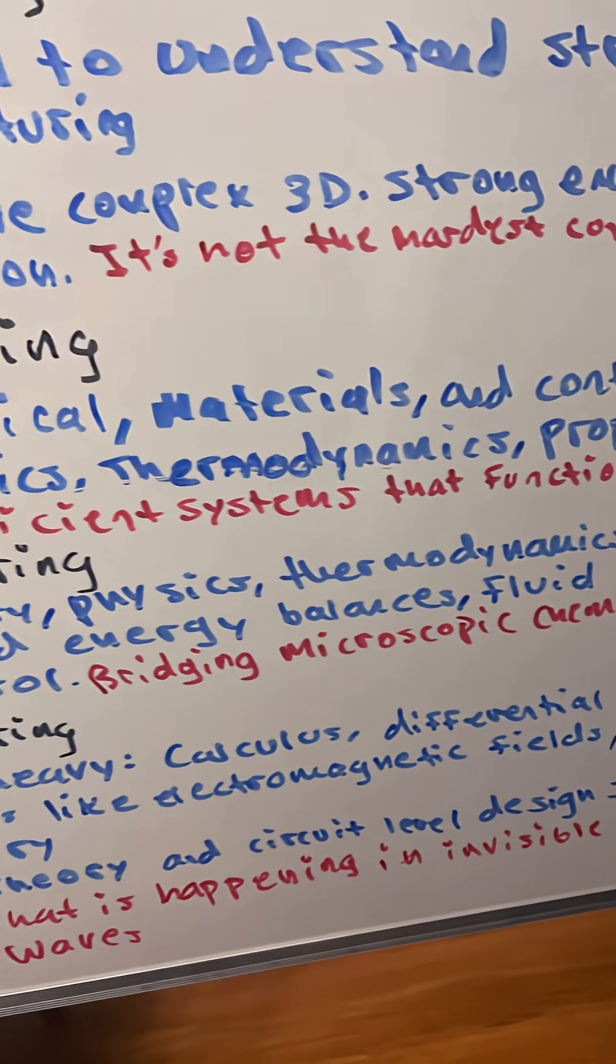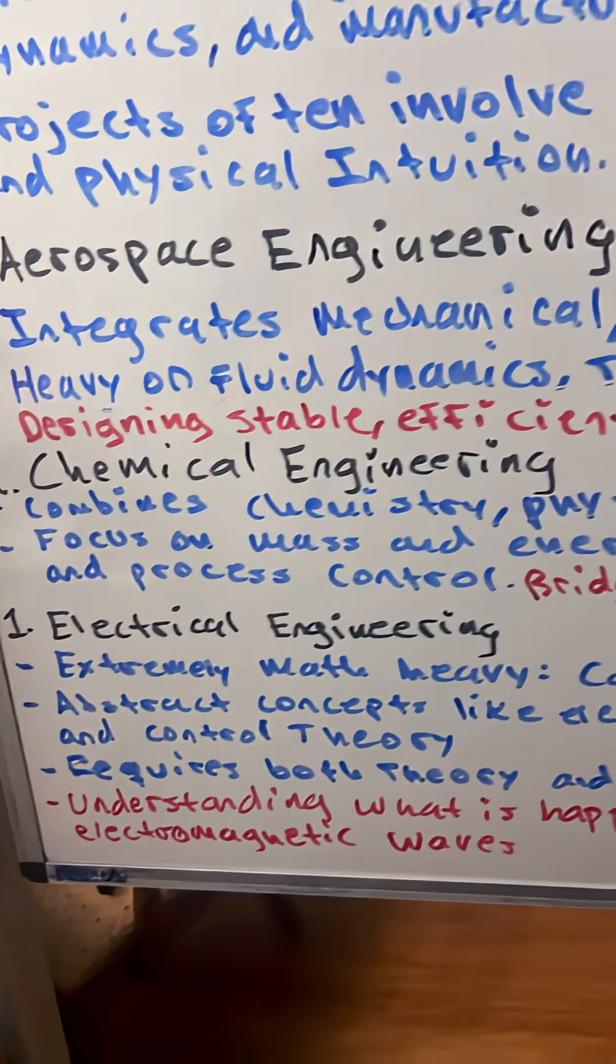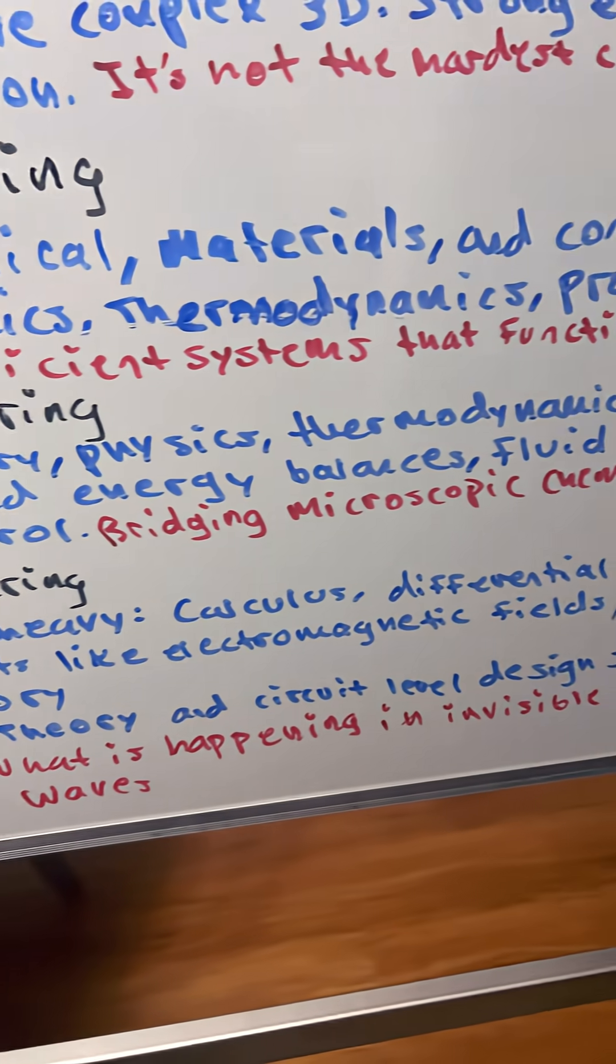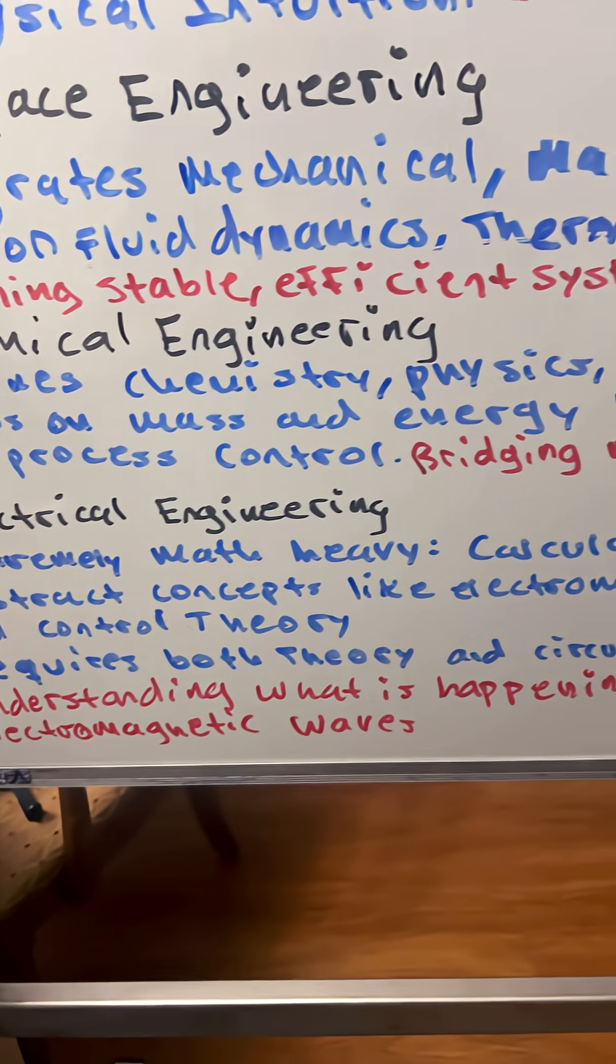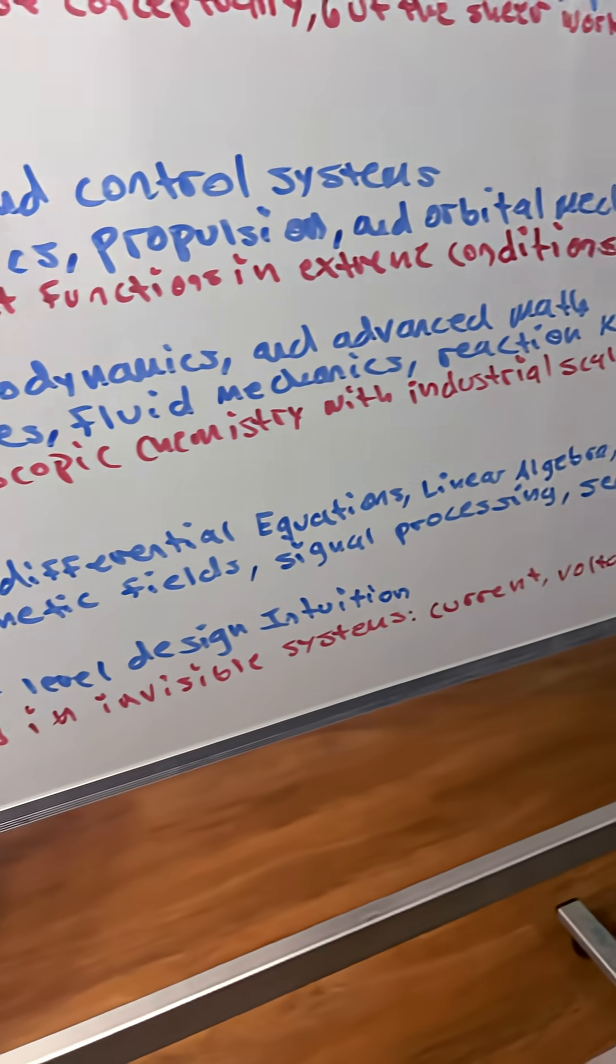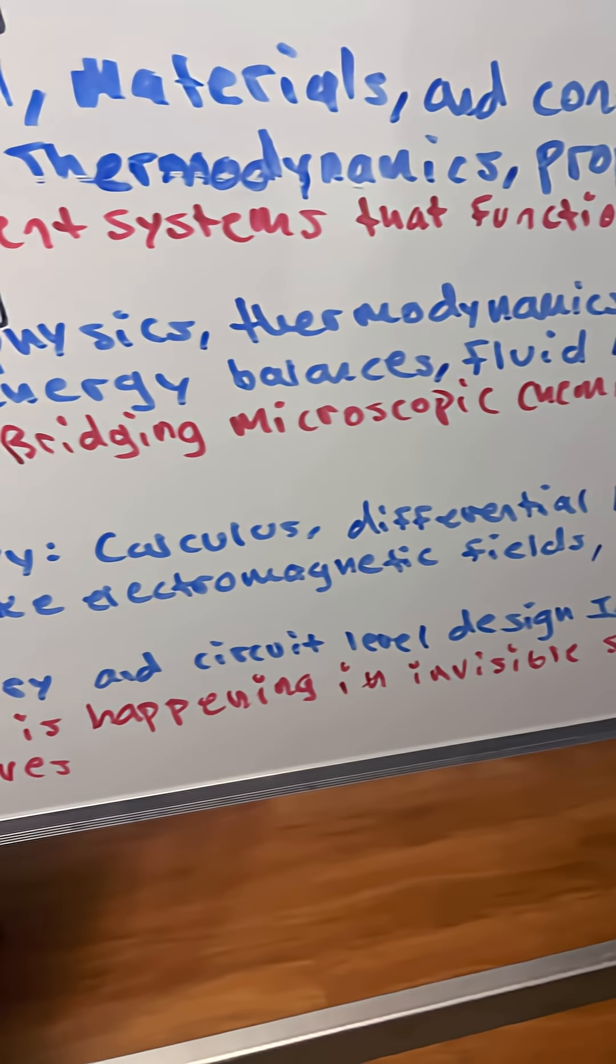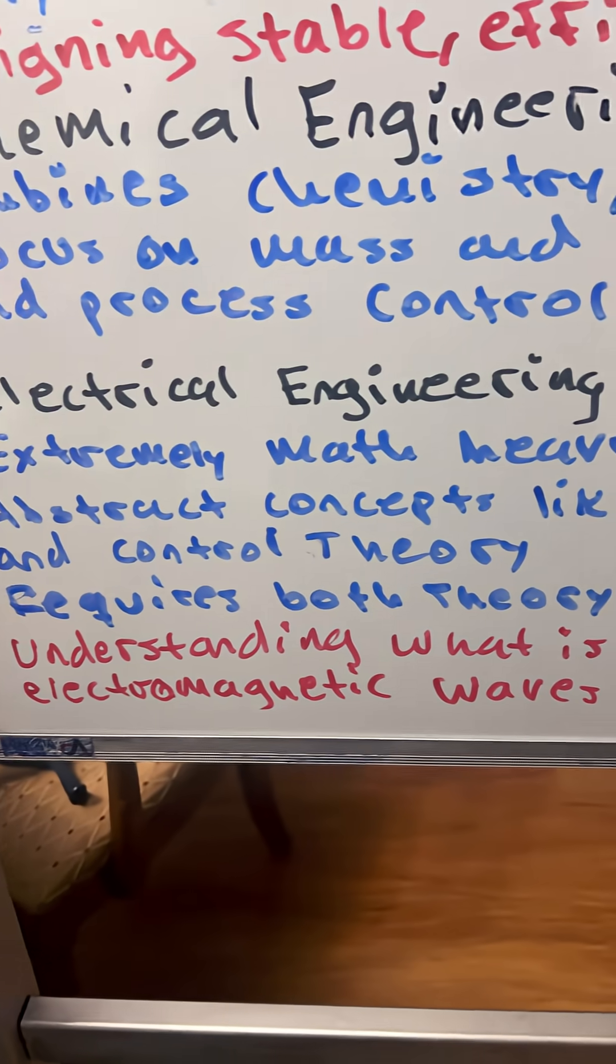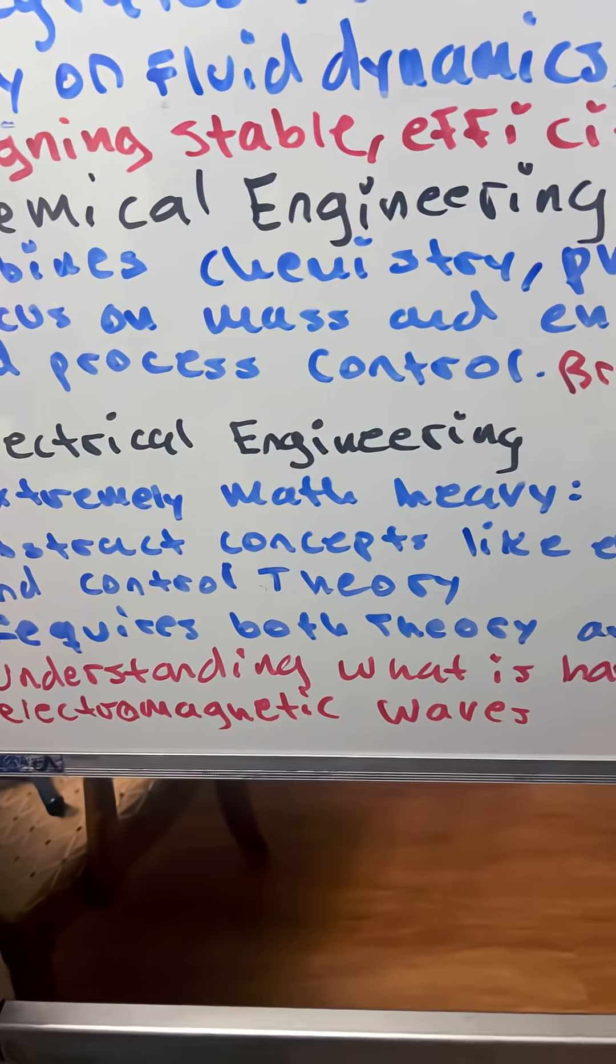And number one, electrical engineering is extremely math heavy: calculus, differential equations, linear algebra, and complex analysis. It's abstract concepts like electromagnetic fields, signal processing, semiconductor physics, and control theory. It requires both theory, circuit level design, and intuition. The core challenge is understanding what is happening in invisible systems like current, voltage, and electromagnetic waves.